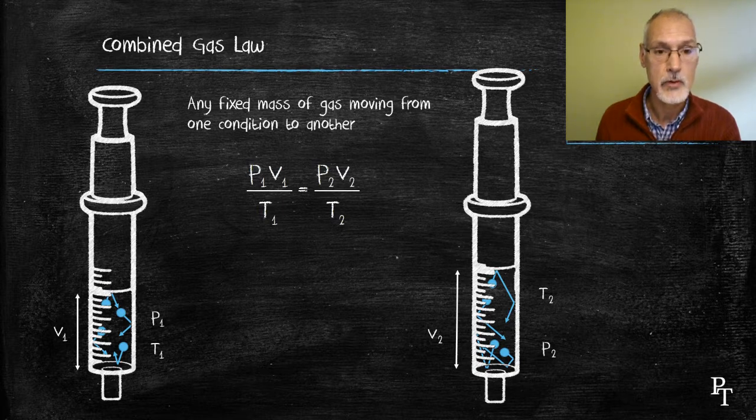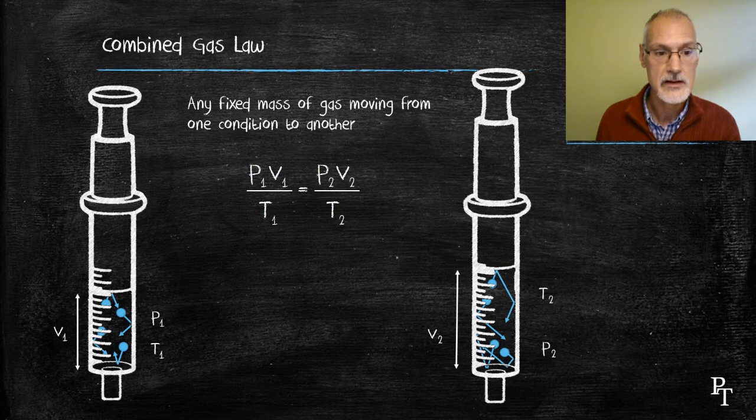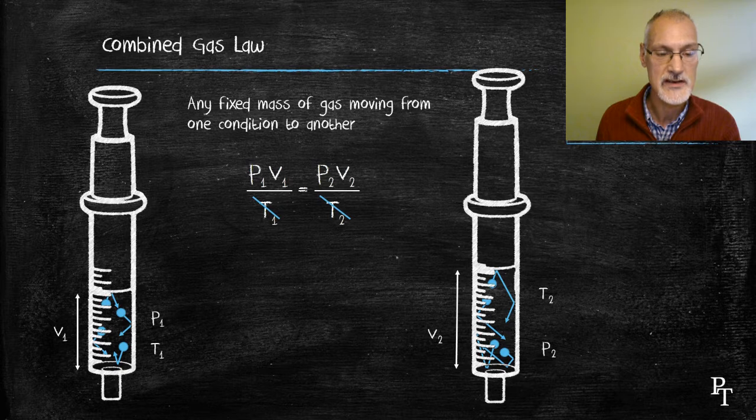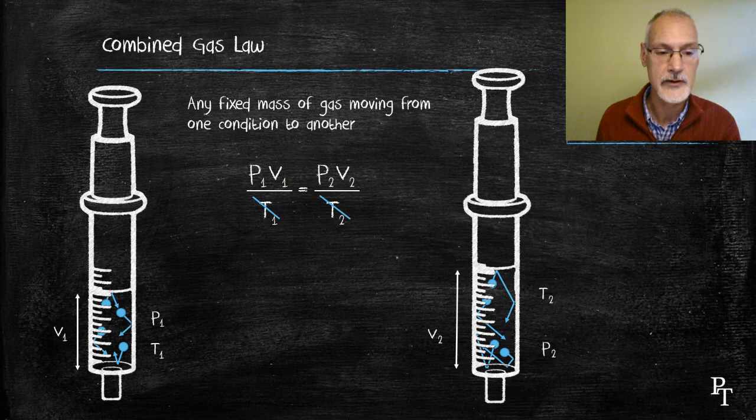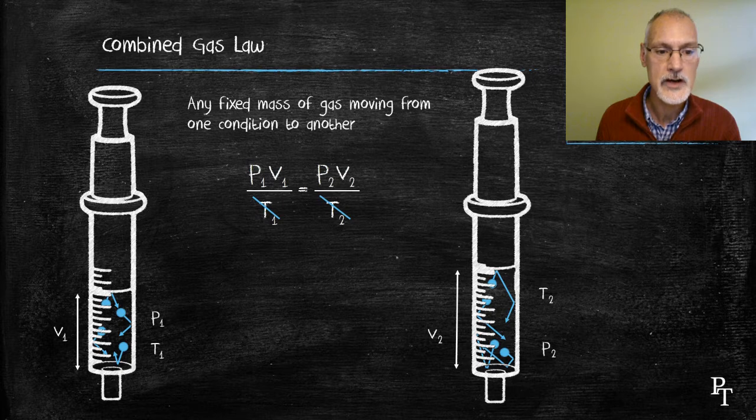For instance, Boyle studied the relationship between pressure and volume, keeping the temperature constant. So if my temperatures are kept constant, they would cancel out, giving me this expression, which exactly is the expression for Boyle's law. And we can do the same with any of the other variables. We can keep the volume constant and then have Gay-Lussac's law, or we can keep the pressure constant and then we would have Charles law.